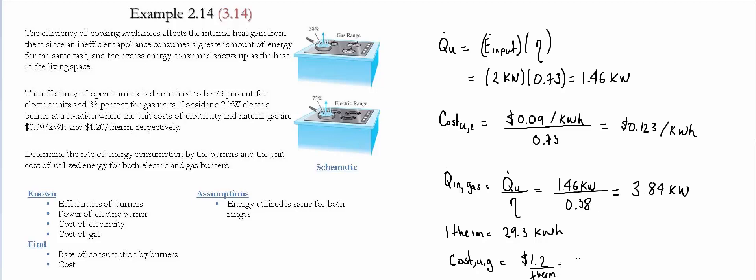We also divide it by the efficiency, in this case it's 0.38, and then we're going to do the conversion that one therm is equal to 29.3 kWh. So this gives us approximately $0.11 per kilowatt-hour.